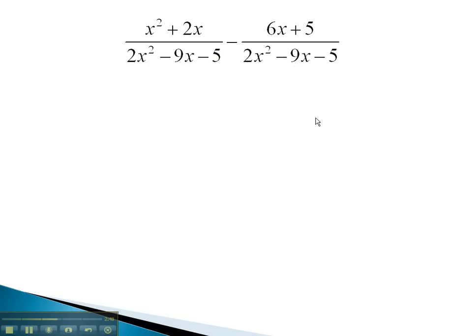Recall, with subtraction, we must first take this negative and distribute it onto the entire numerator. This will give us x squared plus 2x over 2x squared minus 9x minus 5.